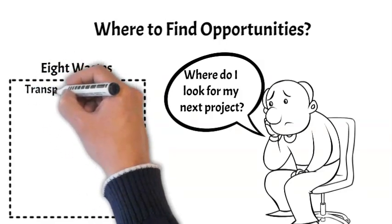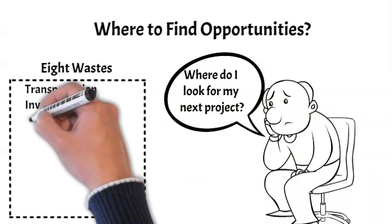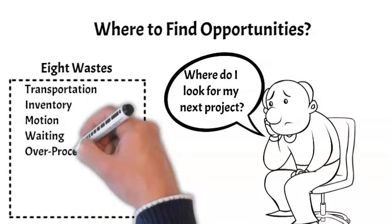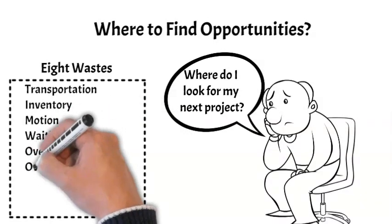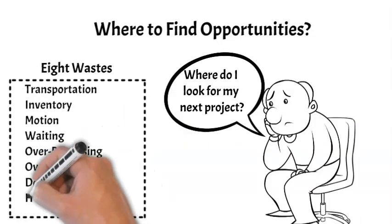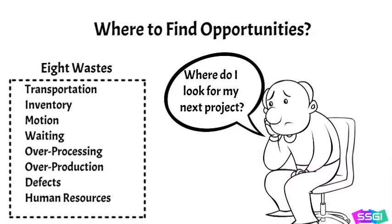Excess and costly transportation. Inventory levels that are too high. Unnecessary motion of staff or customers. Waiting. Over processing. Over production. Defects. And the failure to benefit from the human resources available in the organization. While these are certainly not the only areas in which waste can be found and efficiencies improved, they are suggestions often worth exploring.